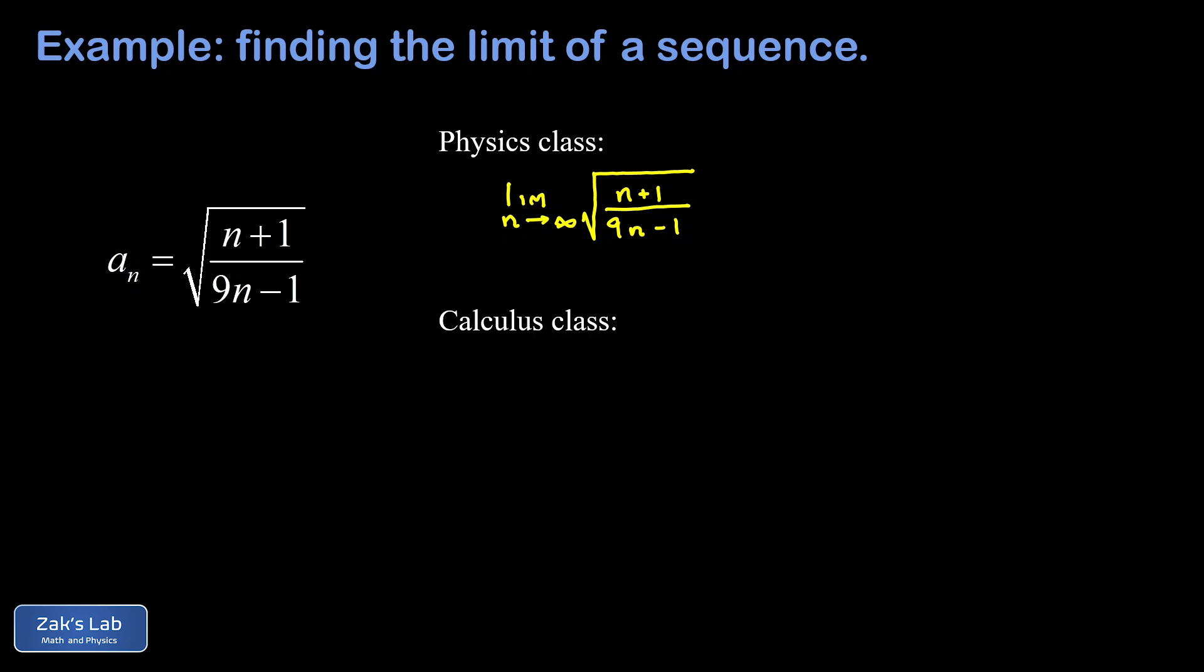So one of the things that physicists are really good at is approximation, and this can look a little bit crude, but as long as it works every time it's a valid approach to applied mathematics. So when I see this expression inside the square root, I see an n plus one where n is growing to infinity.